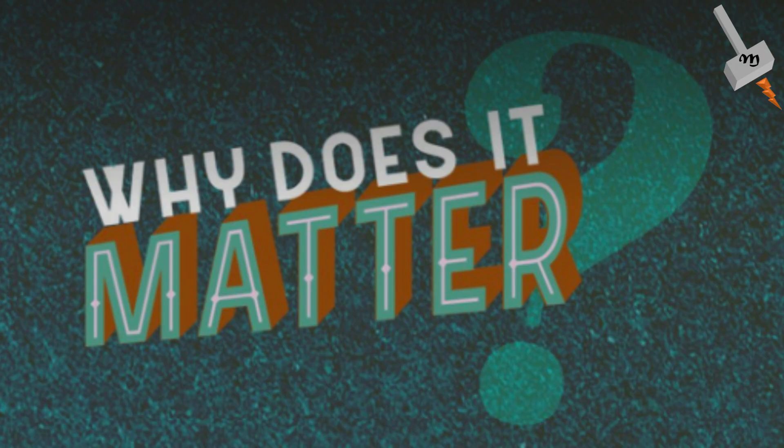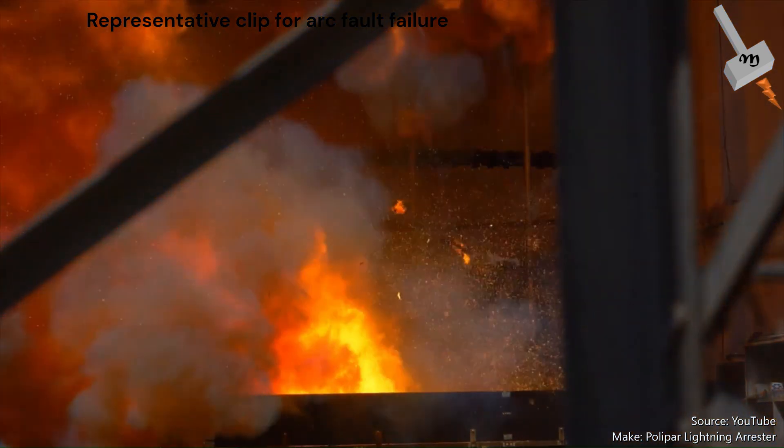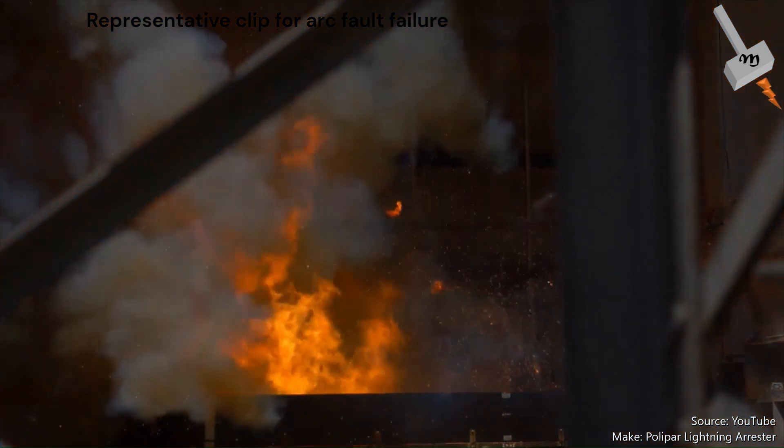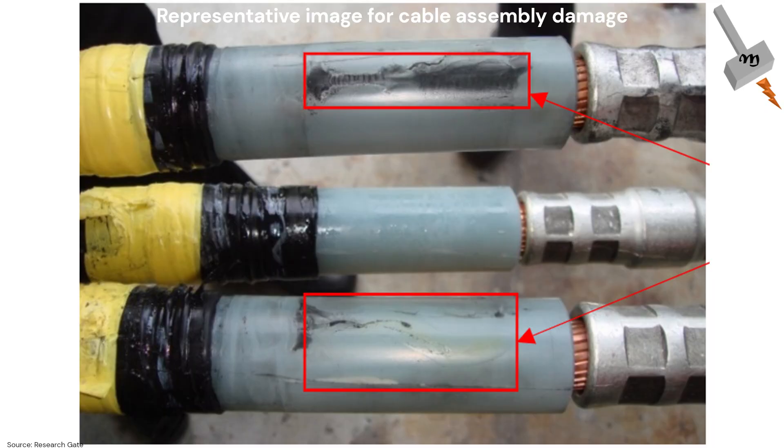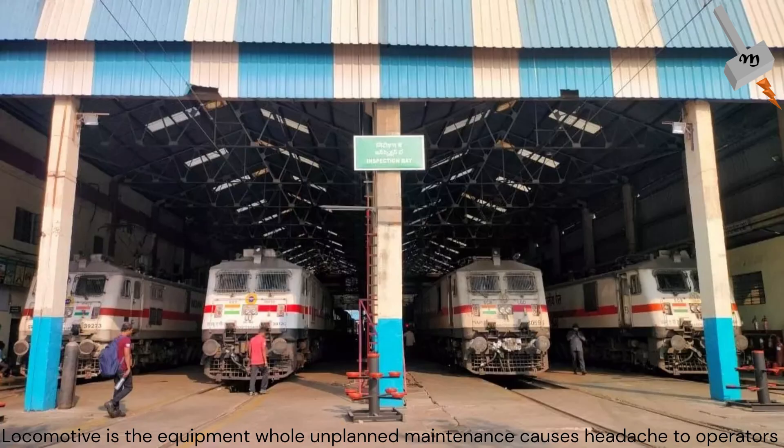So why does this matter? As mentioned above, uncontrolled transient voltage poses a significant challenge to electrical systems. It has the potential to disrupt the operation of vital equipment including transformers. This may lead to premature equipment failure resulting in an unplanned outage and irreparable damage to the equipment. Both are very costly for network managers.